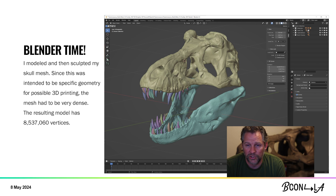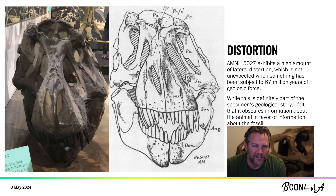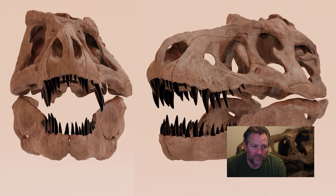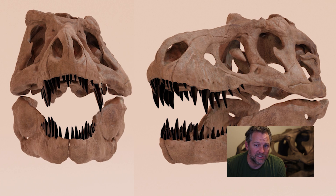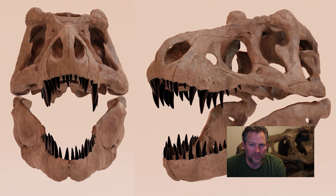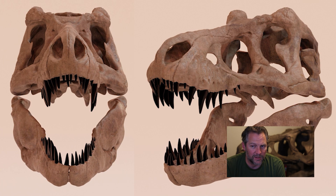So I got to work in Blender. I pushed, I pulled, extruded, and sculpted vertices until I created a very dense mesh. One of the challenges that 5027 posed, and indeed part of what makes it so easy to recognize, is the amount of lateral distortion in the skull. From the sides the skull looks amazing, and from the front it looks like it was run over. Geologic forces will do that over tens of millions of years. So once again, Blender came to the rescue. I wanted my skull to be idealized without distortion. Using Blender I was able to create shape keys to undistort the skull, while still keeping the original shape for future use.